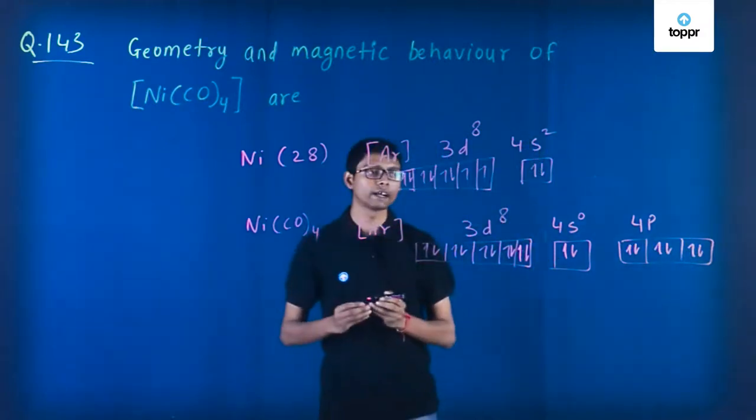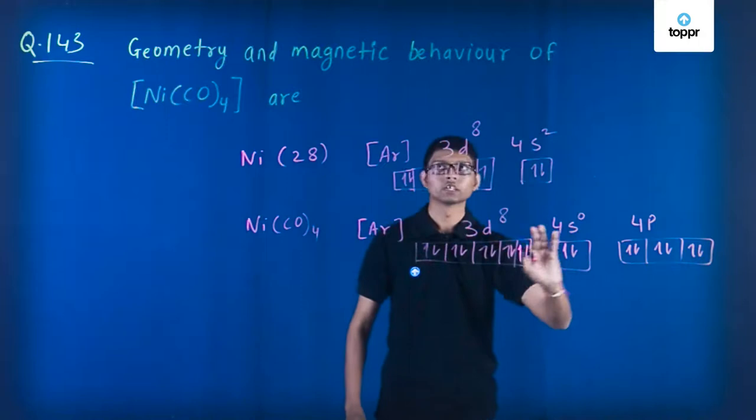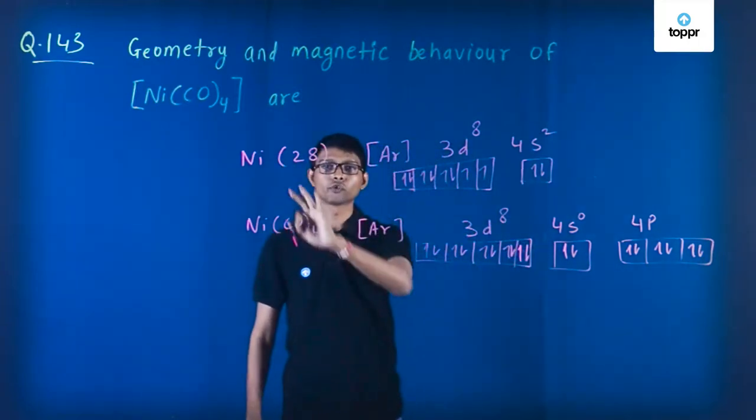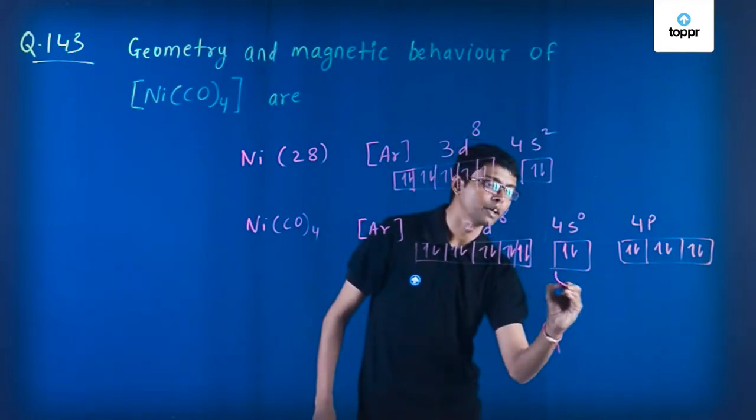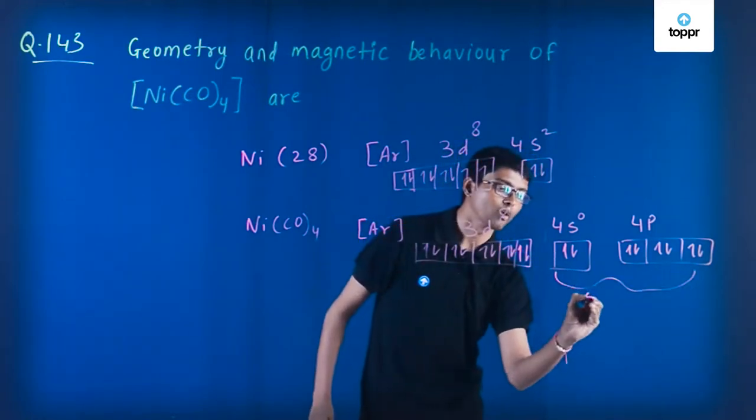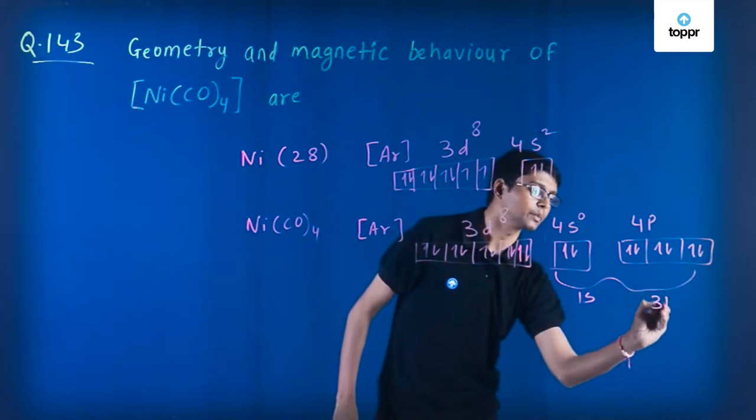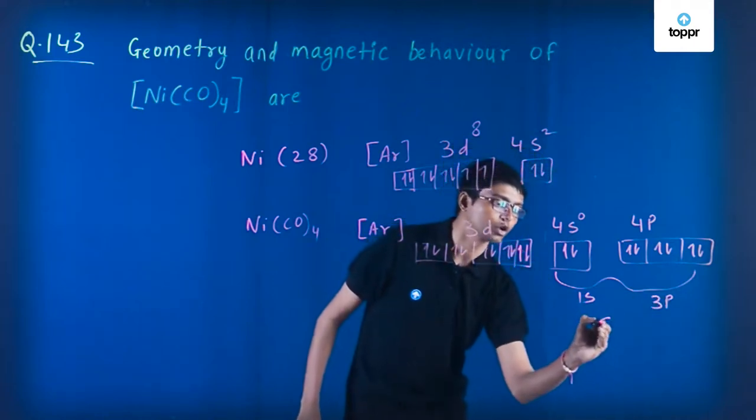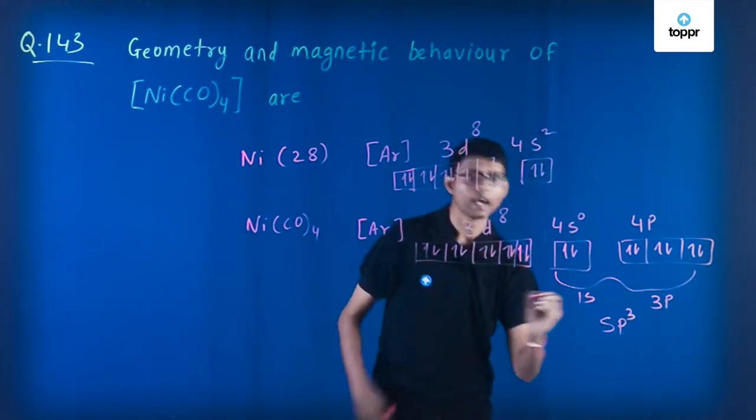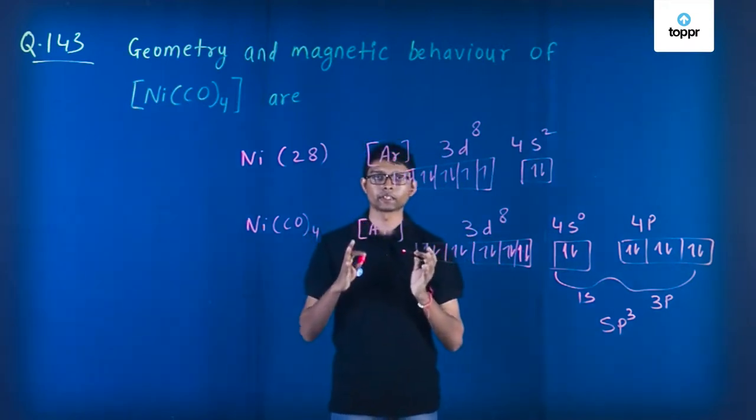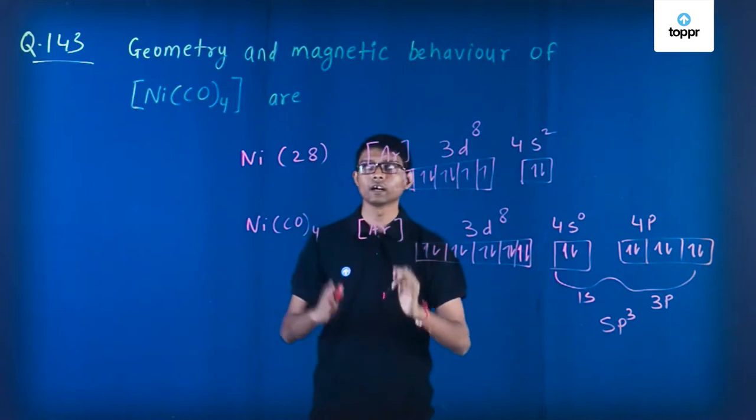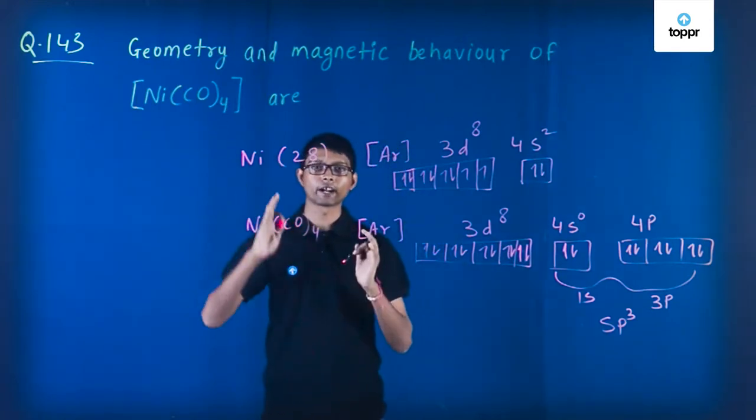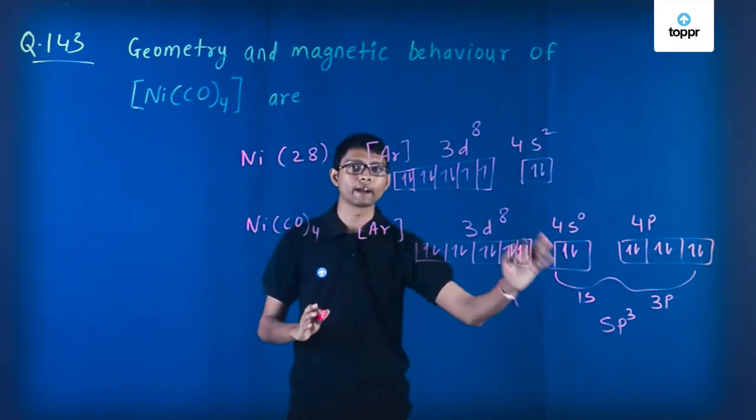You can see that all the electrons are paired, so this means that the Ni(CO)₄ compound is diamagnetic in nature. The other thing you can see is that the bond is formed between s and p subshells: 1 s subshell and 3 p subshells. So this means it is showing sp³ hybridization, and when the compound shows sp³ hybridization it has a tetrahedral geometry. So our answer will be: Ni(CO)₄ is showing tetrahedral geometry along with diamagnetic nature.